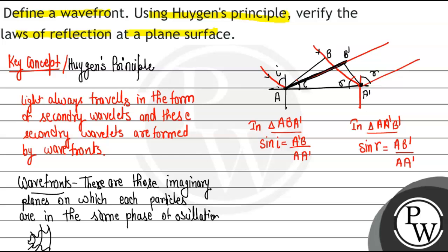So I can say that A'B and AB' are the same, as velocity times time, right, because same media, reflection in the same media.